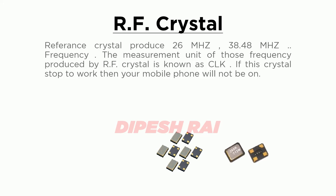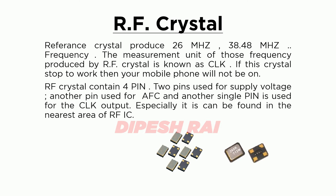The RF crystal operates at frequencies such as 26 MHz, 13.48 MHz, and other frequency values. The measurement unit of the frequency produced by the RF crystal is known as CLK. If this crystal stops working, your mobile phone will not turn on, making it a very important component on the mobile PCB board.